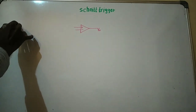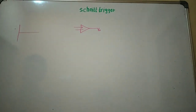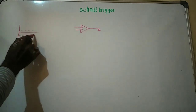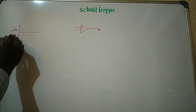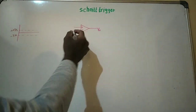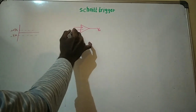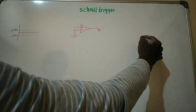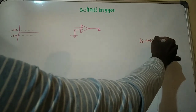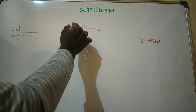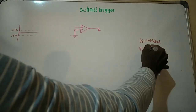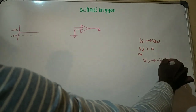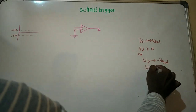For a Schmitt Trigger, we know that there are two different voltage levels — one we call the positive threshold voltage, another one is negative threshold voltage. For an op-amp, if I ground the inverting terminal, if I want the output voltage to be plus Vsat, then the voltage difference Vd should be greater than zero. Similarly, if I want to pull down the output voltage to minus Vsat, then Vd should be lesser than zero — the differential input should be lesser than zero.